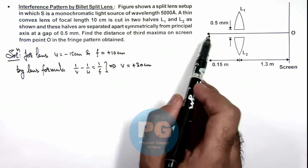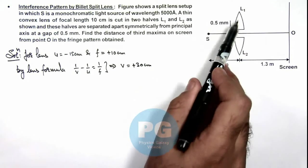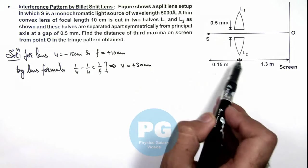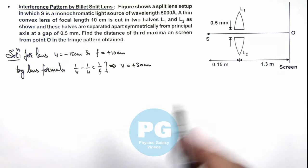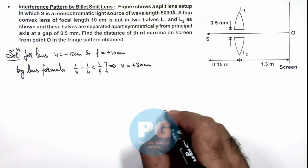That means the image of source in L1 as well as in L2 will be obtained at a distance 30 centimeter to the right of it. So if we draw the picture again.